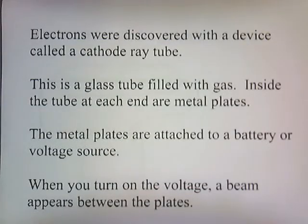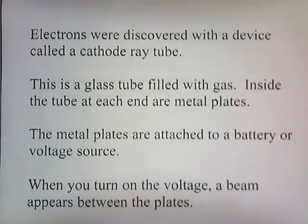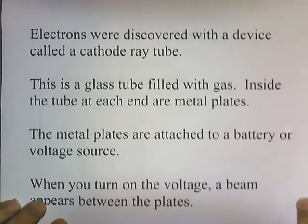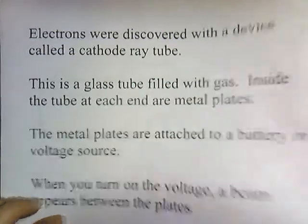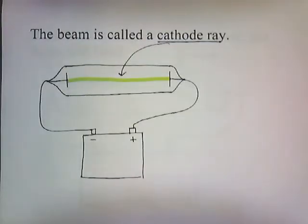Electrons were discovered with a device called a cathode ray tube. This is a tube filled with gas, and inside the tube at each end are metal plates. The metal plates are attached to a battery or voltage source. When you turn on the voltage, a beam appears between the plates, and the beam is called a cathode ray.